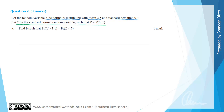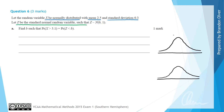To do this question we're going to start by drawing out two normal distributions one above the other. The top one is X, normally distributed with a mean of 2.5 and a variance of 0.3 squared, so the mean value is 2.5. The second bell-shaped curve is Z, normally distributed with a mean of 0 and a standard deviation of 1, making that central value 0.